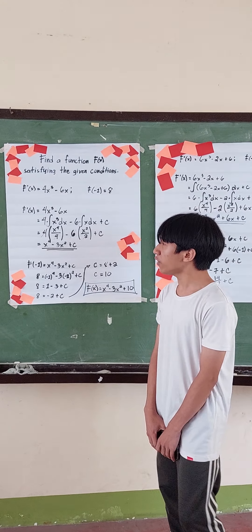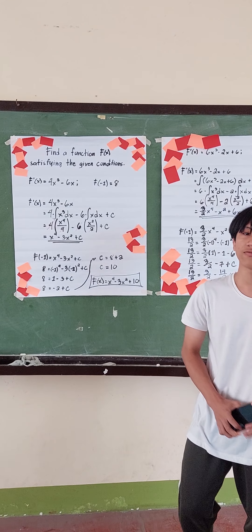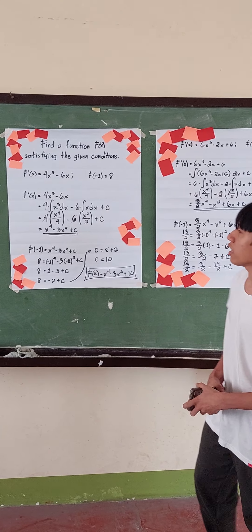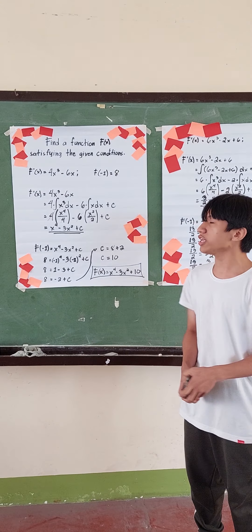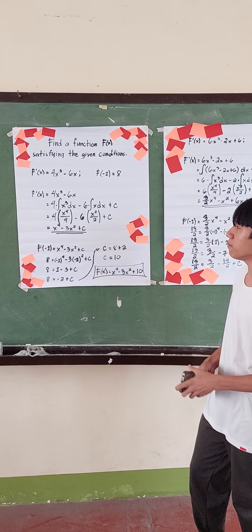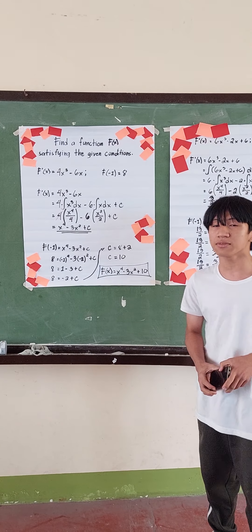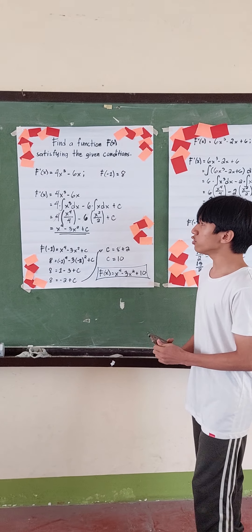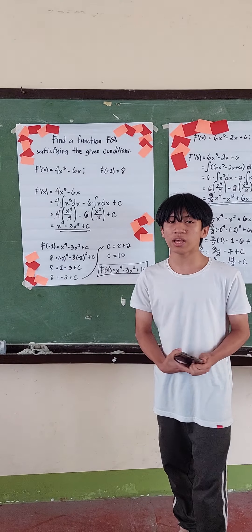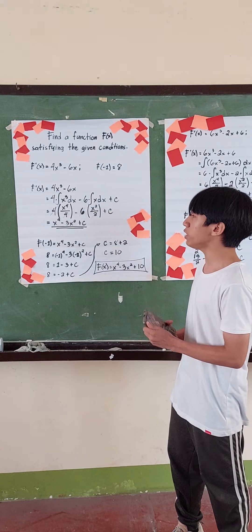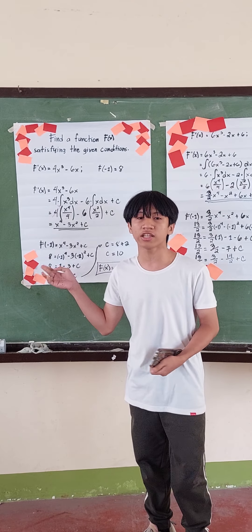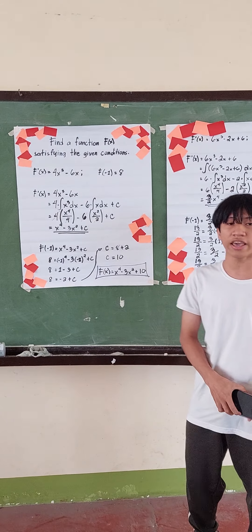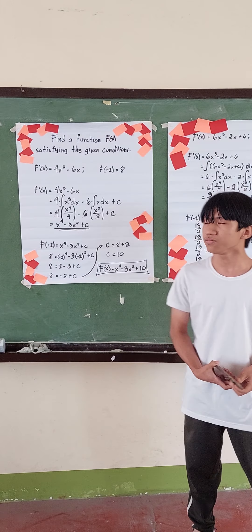So f prime of x is equal to 4x cubed minus 6x. Now we have to simplify it: 4 times the integral of x cubed dx minus 6 times the integral of x dx plus c. The integral of x cubed dx is x to the 4th over 4, and the integral of x dx is x squared over 2.